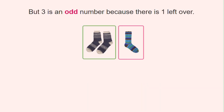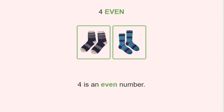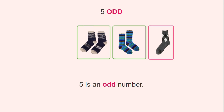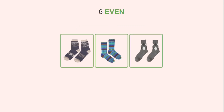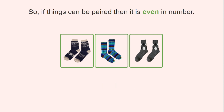Three is an odd number because there is one left over. Four is an even number. Five is an odd number. Six is an even number. So if things can be paired, then the number is even.